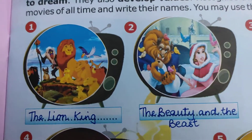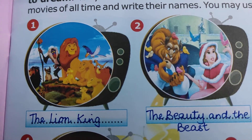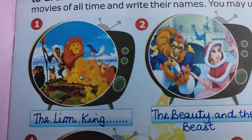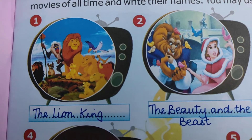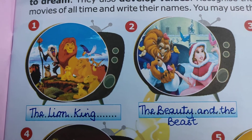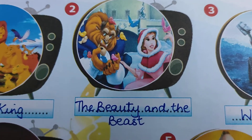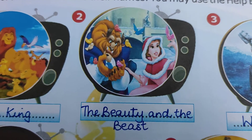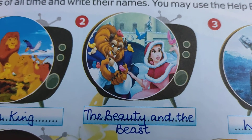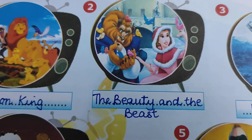As you can see, the first picture is related to animals — you can see a lion. So this animated movie is The Lion King. The second picture shows a beautiful girl and a beast. This animated film is Beauty and the Beast.